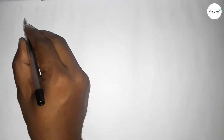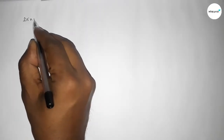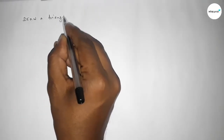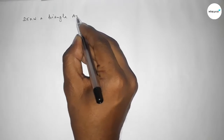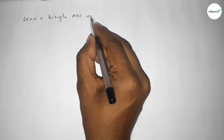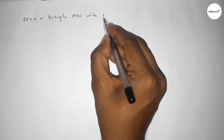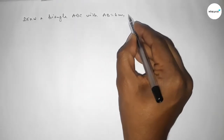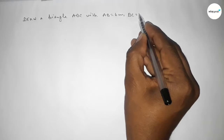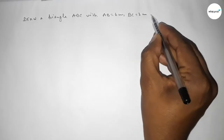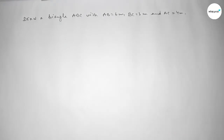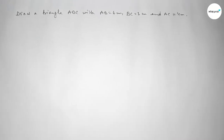Hi everyone, welcome to Essay Share Classes. Today in this video we have to draw a triangle ABC with AB equal to 6 centimeters, BC equal to 3 centimeters, and AC equal to 4 centimeters. Let's start the video.